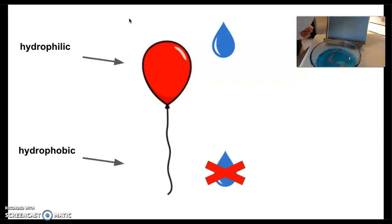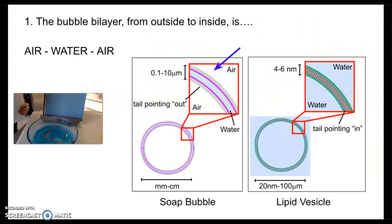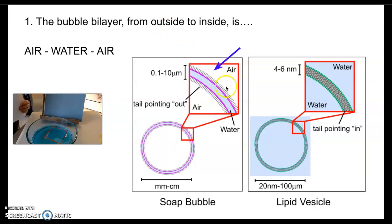If you look at the picture to the right, you'll notice there are a bunch of small balloon-like structures — two of them — with water in between. So if we look at soap from the outside to the inside, this bubble bilayer is: air, water, air. See how the tails are on the outside? The heads, which like water, are on the inside, trapping the water inside.